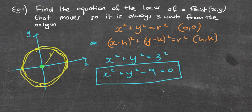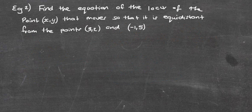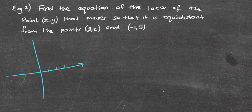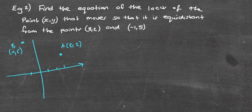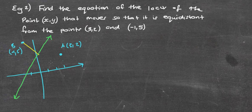Question three: find the equation of the locus of the point (x, y) that moves so that it is equidistant from the two points (3, 2) and (-1, 5). Point A is (3, 2) — about one, two, three across and one, two up. Point B is (-1, 5) — negative one across and up five. We're looking for the equation of the locus that is always the same distance from A and B, which means it's going to be a straight line. The distance from any point on that line to A and to B will be equal.